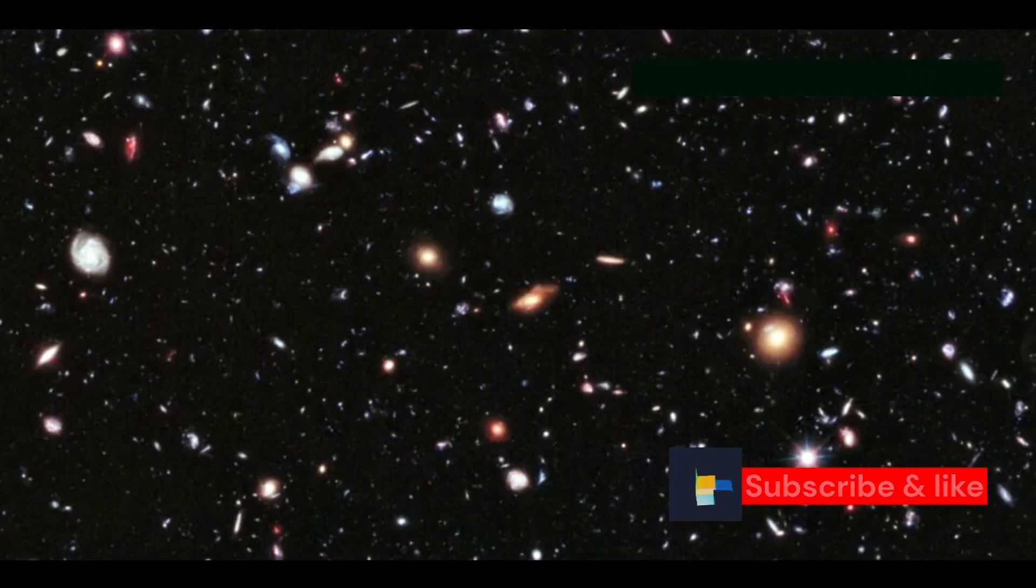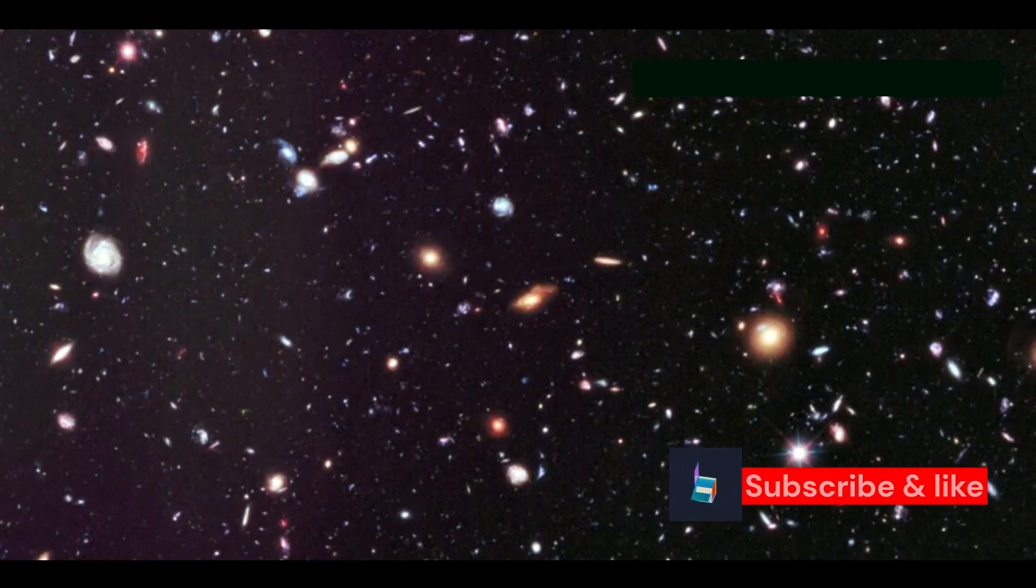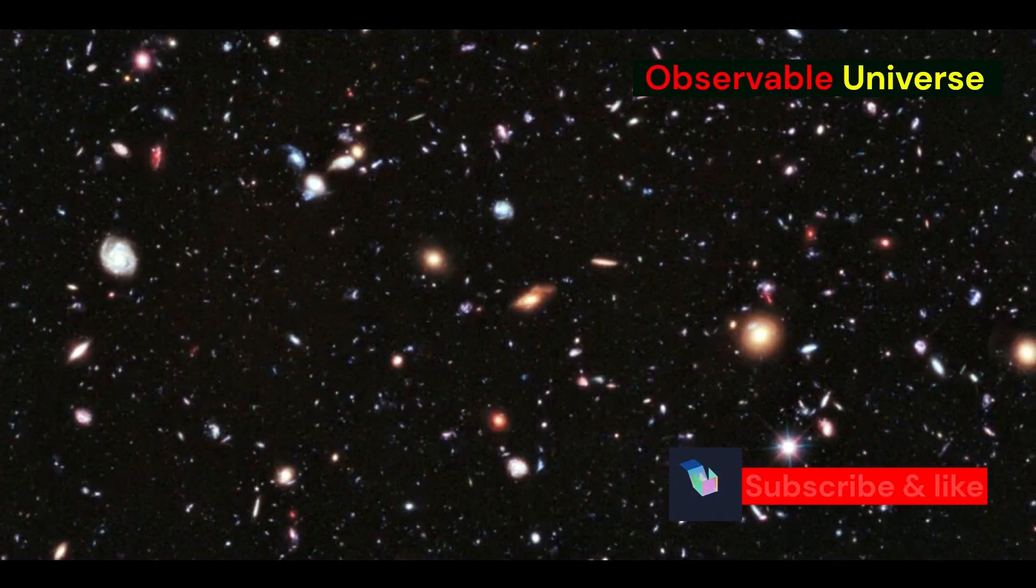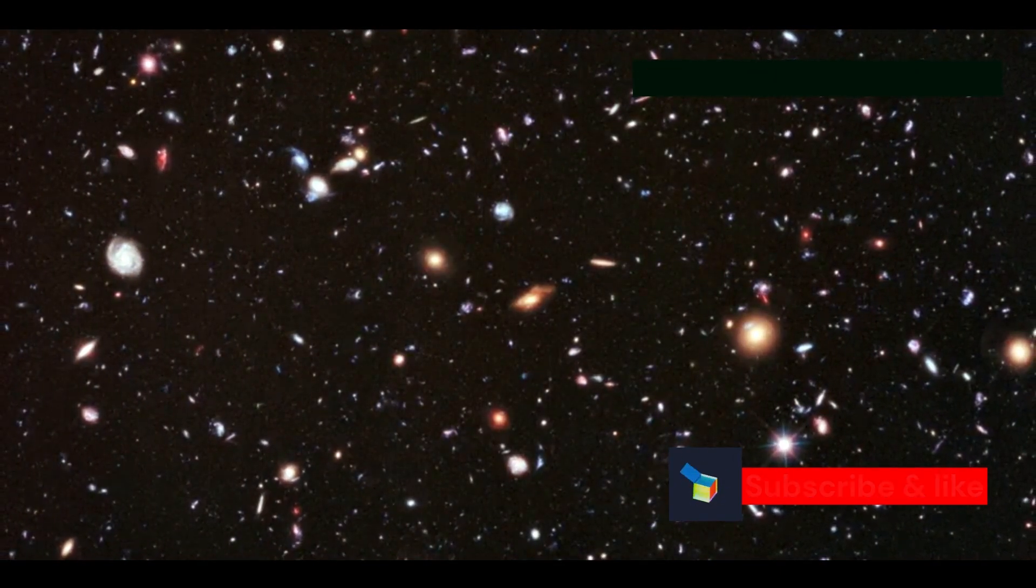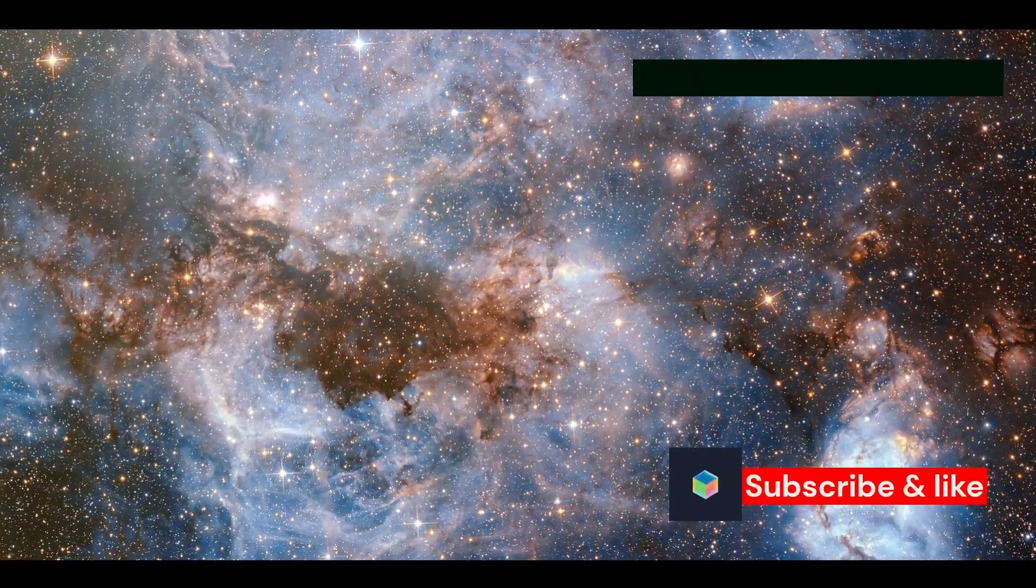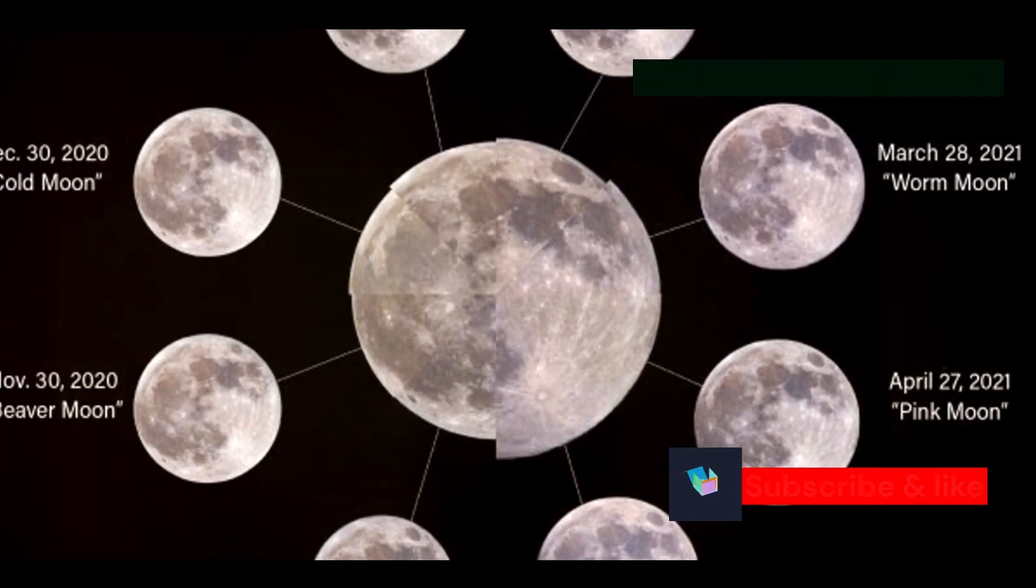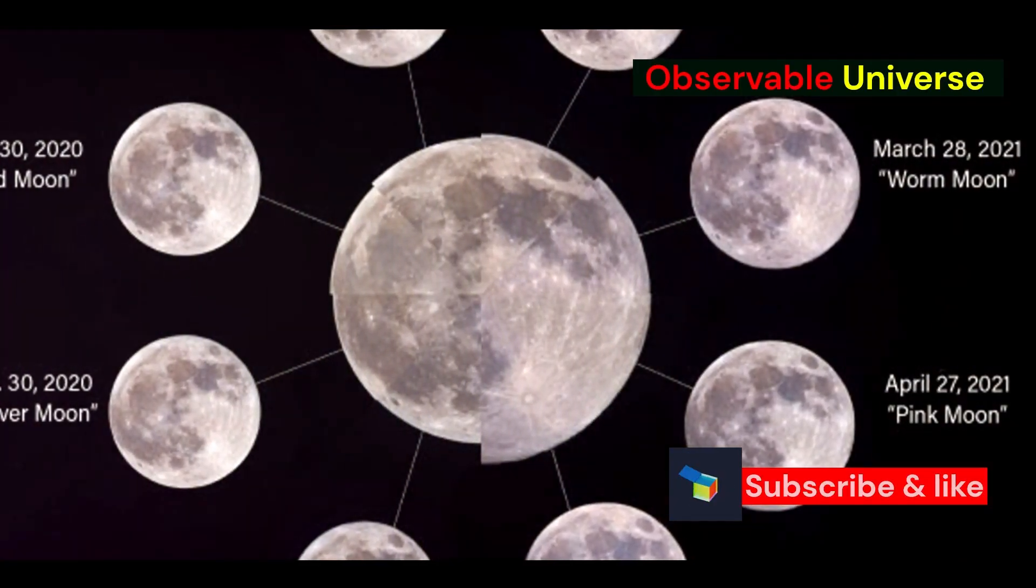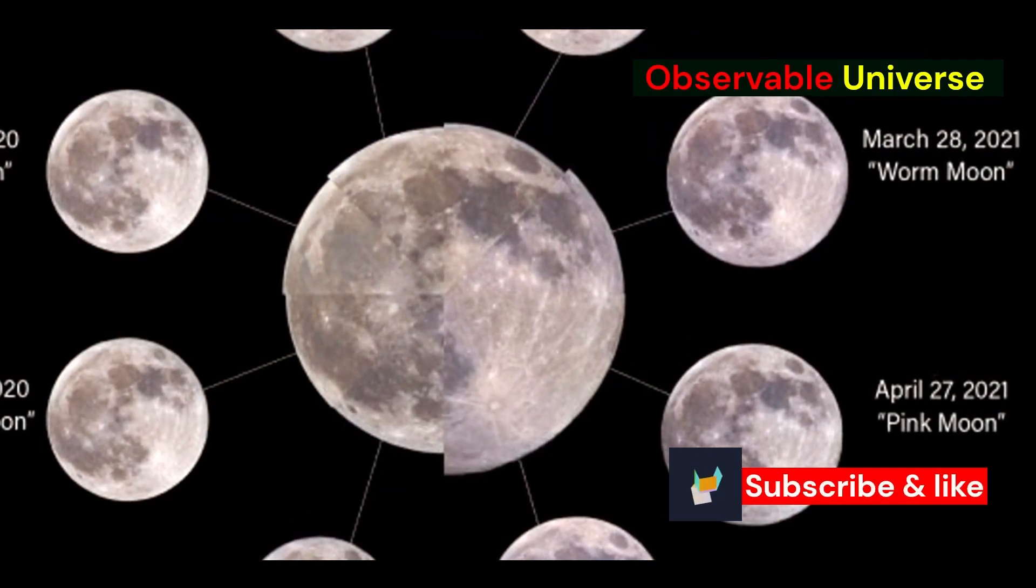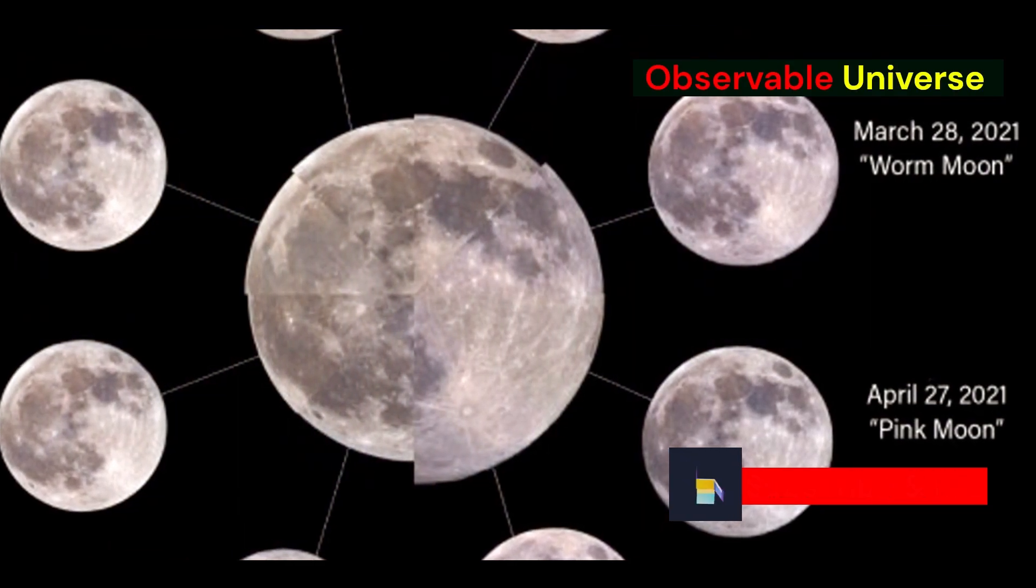The most distant light we can detect is the cosmic microwave background, or CMB radiation. This ancient light is a relic from the early universe, a whisper from the dawn of time. This faint afterglow of the Big Bang is the oldest light in the universe—a baby picture of the cosmos when it was just 380,000 years old. It provides us with invaluable information about the universe's infancy, helping us understand its origins and evolution.